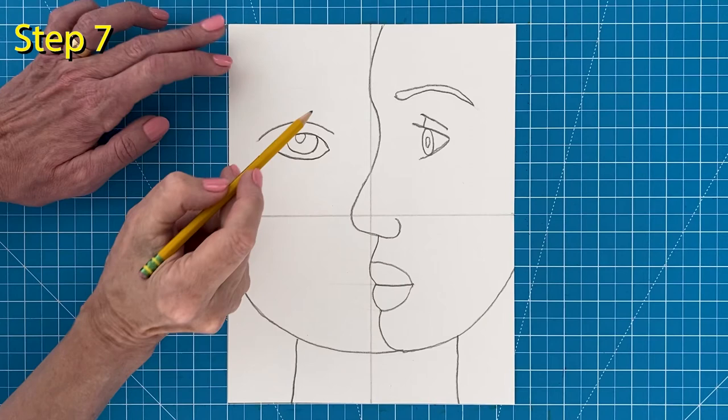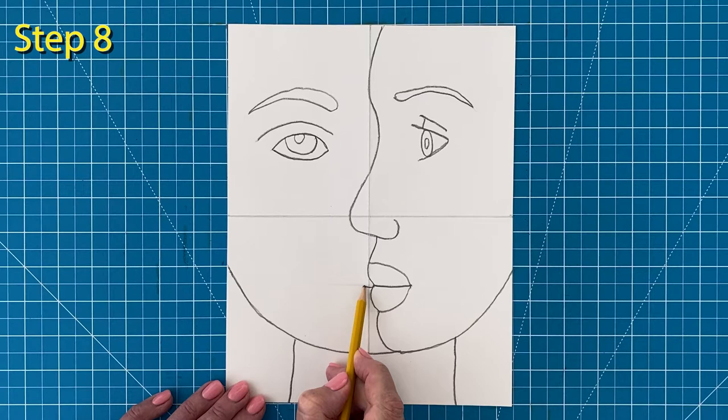Step number eight: Draw the left side of the mouth to finish that side of the face. Step number nine: It's time to start tracing your abstract portrait with a black marker.